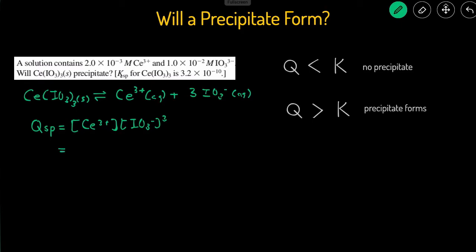Now we can plug in the concentrations given in the problem. The concentration of Ce³⁺ is 2×10⁻³, and the concentration of IL₃⁻ is 1×10⁻², but there's a cubed here, so we bring that cubed down. Entering this into the calculator, you should get 2×10⁻⁹. If you're not getting that, try entering it with parentheses and you should get 2×10⁻⁹.